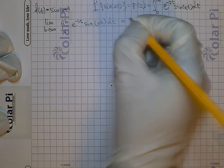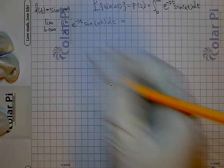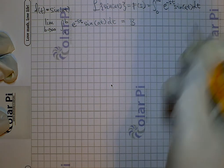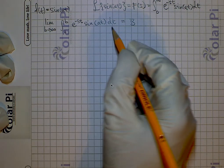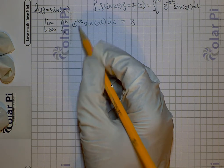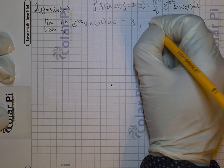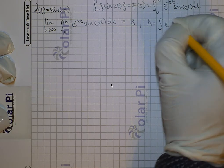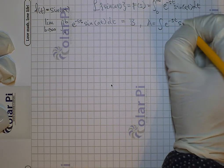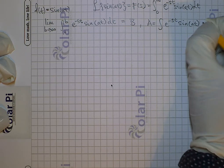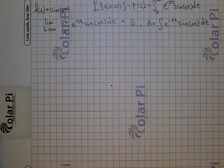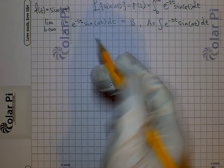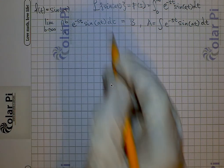Let's call this integral with the limits of integration and with the limit as b goes to infinity, let's call it integral capital B. But first, because it mainly deals with the integral of e to the negative st sine of at, I'm going to say that capital A is equal to the integral of e to the negative st sine of at dt. Once I work out capital A, I know it will give me a way to find capital B, which is what we're after.